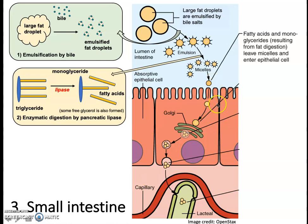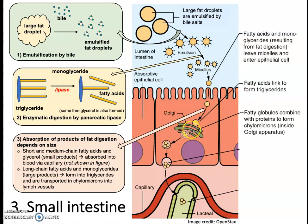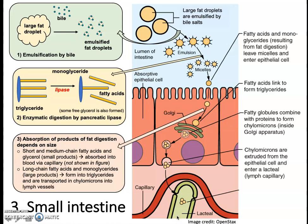As shown in this diagram, the first thing that happens is that the fatty acids and monoglycerides reform into triglycerides, and then they're incorporated into larger structures called chylomicrons. Chylomicrons can then be absorbed into the lacteals — the lymph vessels present in the villi of the small intestine — and they'll travel through the lymph system and eventually be delivered to the bloodstream.